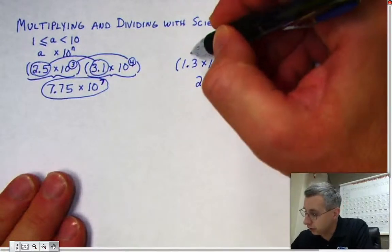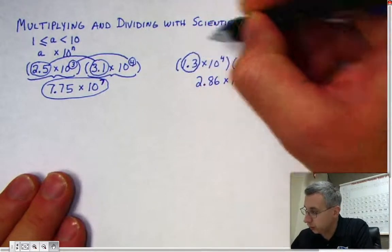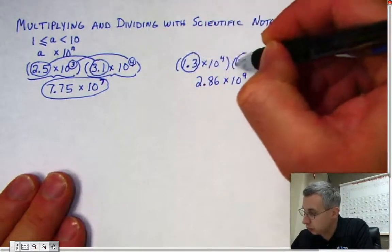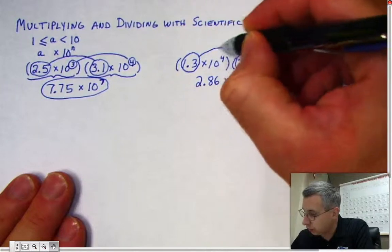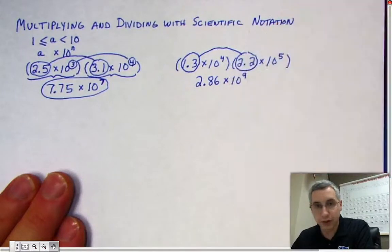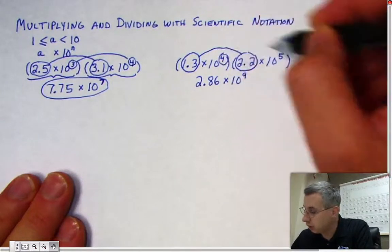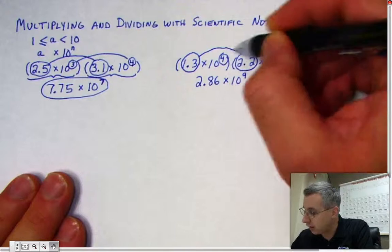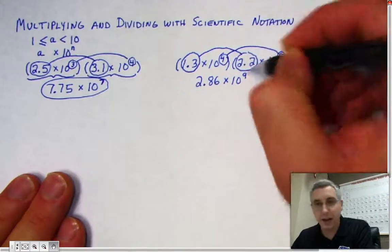The way you did that: take 1.3 and 2.2 and multiply them together to get 2.86. And take 4 and 5, and add those exponents to get 9.